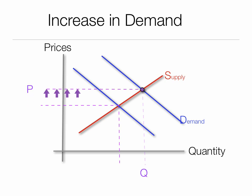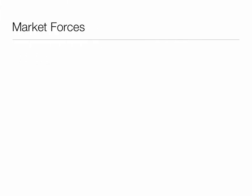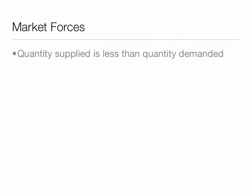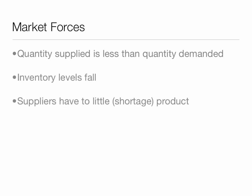Quantity supplied increases, and the market forces at work show that quantity supplied is less than quantity demanded — inventory levels fall. Suppliers have too little; they have a shortage of the product, and suppliers are forced to raise prices. And that's it.